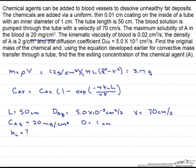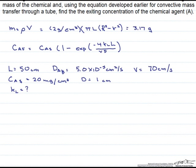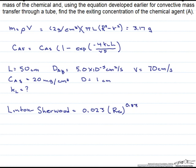What we are missing here is k sub l, and for that we are going to need to use a convective mass transfer correlation. The one that pertains to flow and diffusion in a tube is known as the Linton-Sherwood correlation: Sh = 0.023 times Reynolds to the 0.83 times Schmidt number raised to the one-third. This equals the Sherwood number, which is k sub l times the diameter divided by the diffusivity — a ratio of the mass transport resistance to the convective mass transfer resistance.